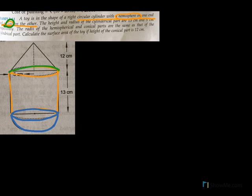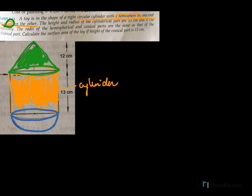A toy is in the shape of a circular cylinder with a hemisphere on one end and a cone on the other. Here we have the cylinder, and at one end of the cylinder there is a hemisphere, and on the other end there is a cone. So we have three figures: the cylinder, the cone, and at the base we have the hemisphere.